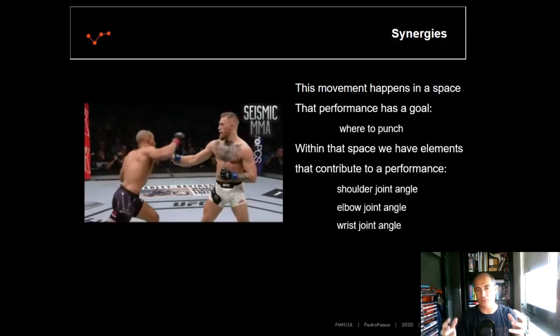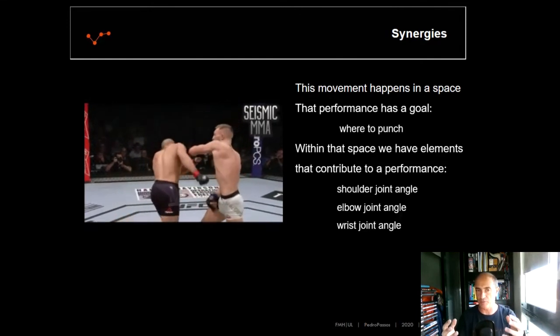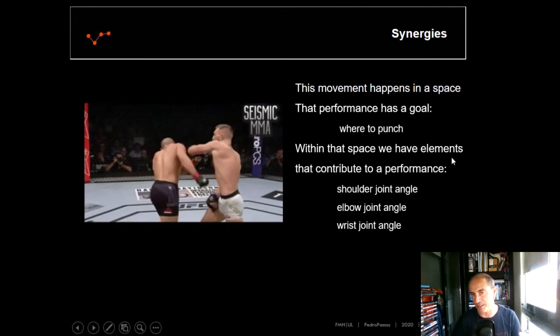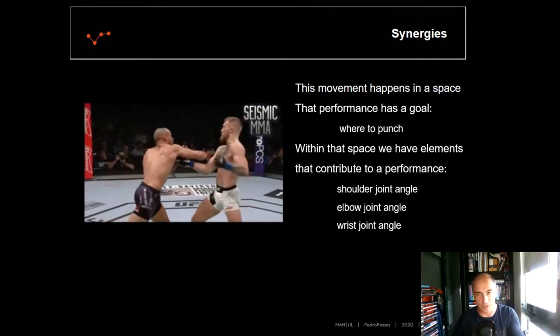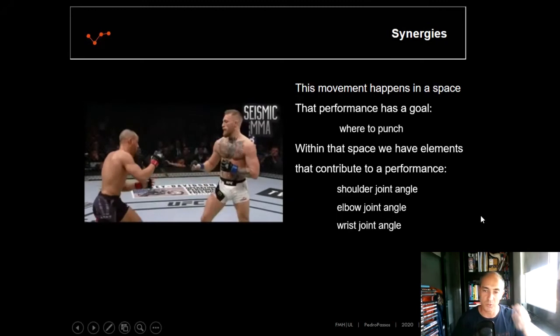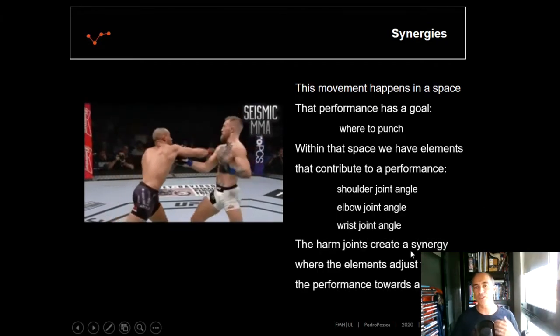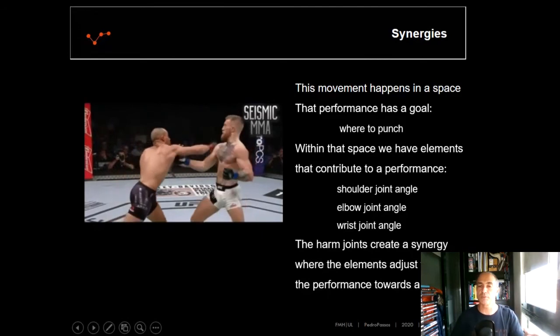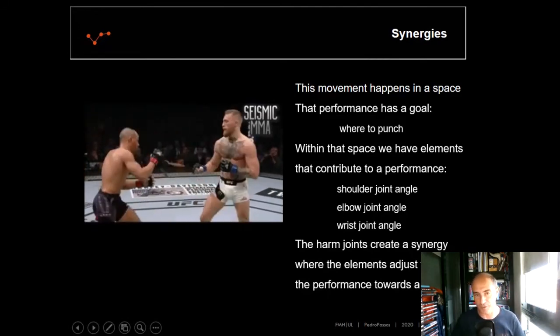So we have here two concepts that seem to be complementary. On one side, we have the variability of several elements to stabilize the performance goal, which is the place where to punch. So the arm joints create, probably, a synergy where the elements adjust to stabilize the performance towards the goal.